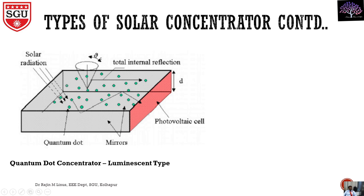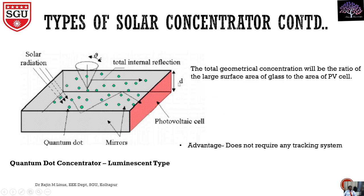Why is it the luminescent type? Light and solar radiation will pass through and there are quantum dots inside. Internal reflection will happen due to the quantum dots, and finally the light will hit the PV panel. The photovoltaic cell area will be very less compared with the geometrical concentration of the quantum dots. The advantage is it does not require any tracking system. Once the light passes, internal reflection will happen automatically due to the quantum dot, so a small area is sufficient for the photovoltaic cell.